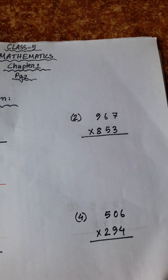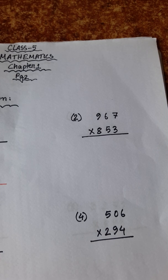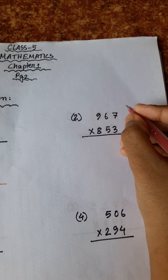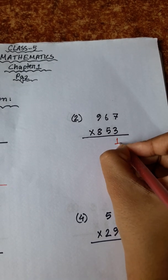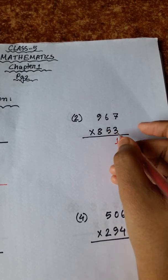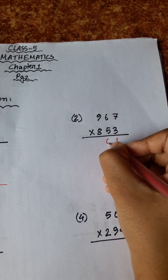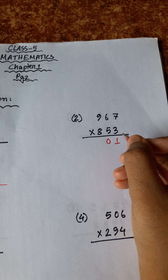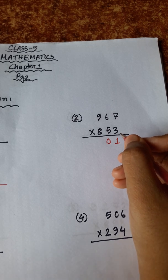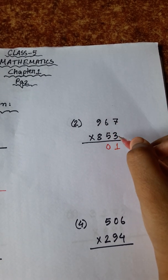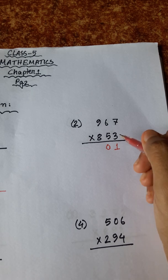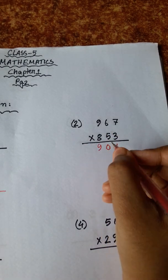Number 2: 967 multiplied by 853. 7 threes are 21, carry 2. 6 threes are 18, plus 2 is 20, carry 2. 9 threes are 27, plus 2 is 29.